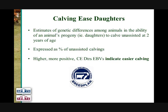So we have two different EBVs — a Calving Ease Direct and a Calving Ease Daughter's — both relating to different traits, and both EBVs reflecting traits which act or operate fairly independently of one another.